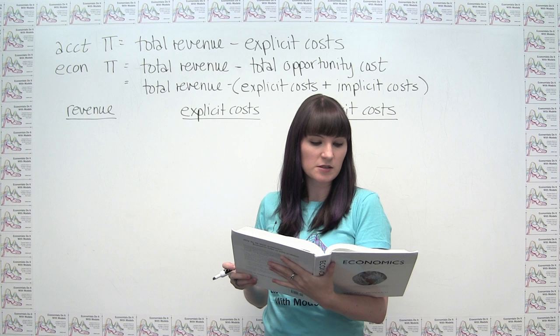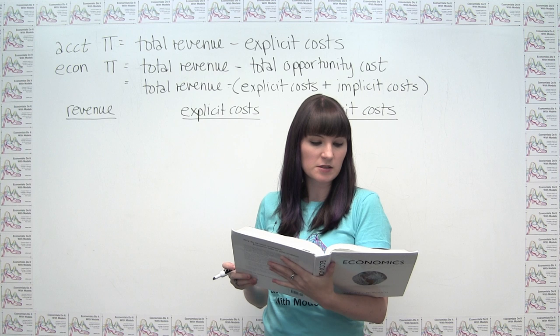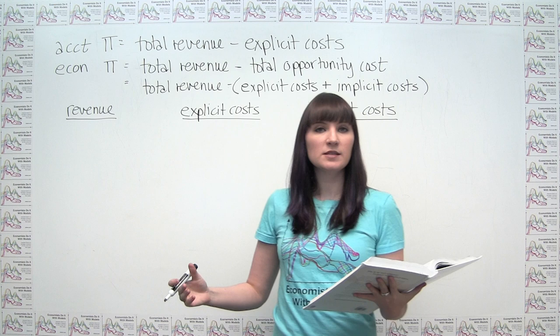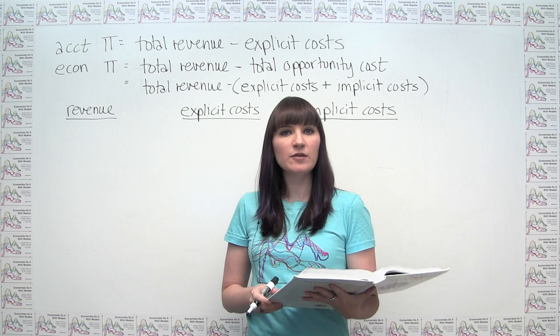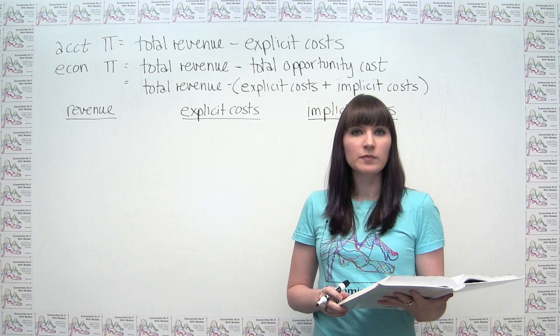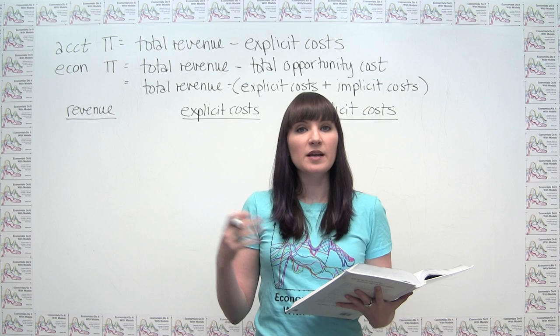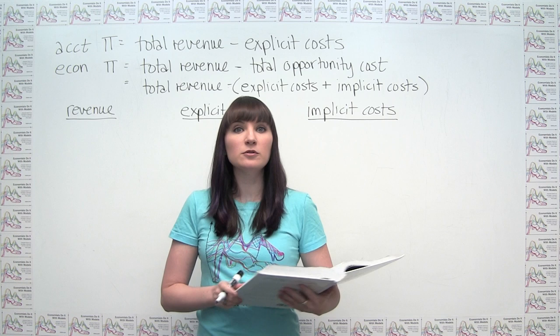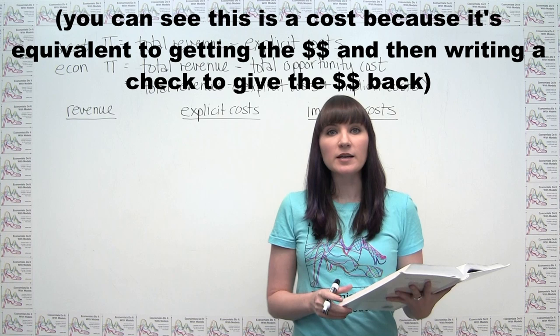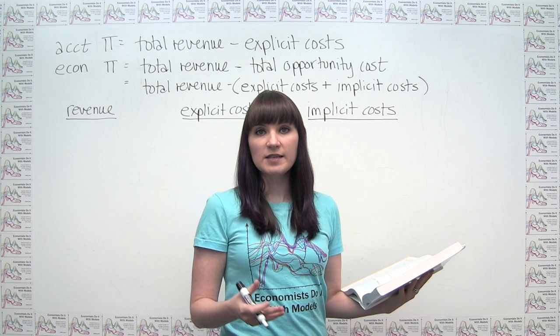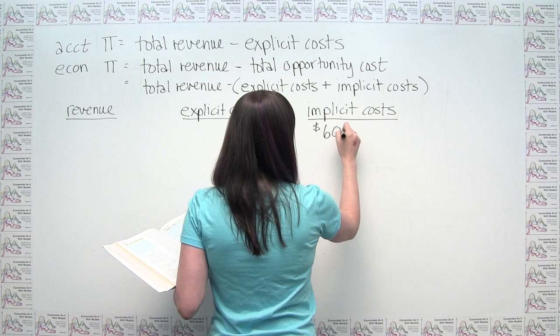It says last year Jared left a job that pays $60,000 to run his own bike repair shop. He's not literally paying $60,000 for the privilege of running this shop, but he did give up an opportunity worth $60,000. This $60,000 that Jared was making at the job he gave up counts as an implicit cost — $60,000 per year implicit cost.